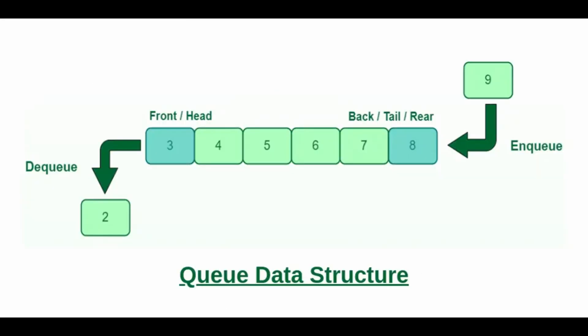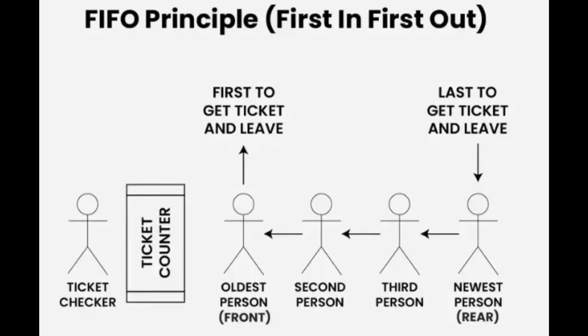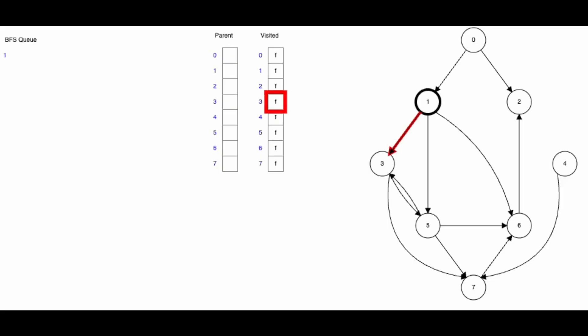Then we have the queue, which is the opposite of a stack. The first thing you put in is the first thing you take out. You add to the back of the line and take from the front. Think of waiting in line for ice cream — the first person in line gets served first. Adding to the back or taking from the front is fast, but looking for someone in the middle of the line is slow: O(N). Queues are used a lot in a search method called breadth-first search.